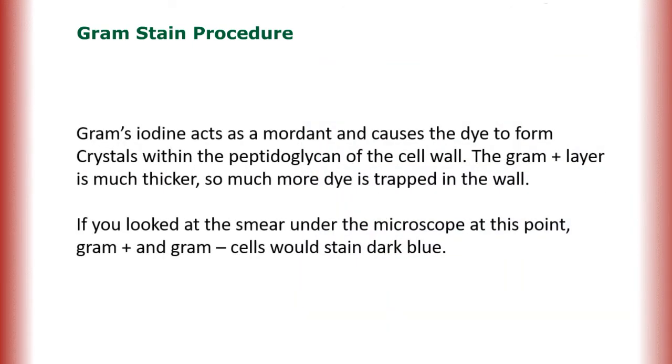Gram's iodine acts as a mordant and causes the dye to form crystals within the peptidoglycan of the cell wall. The Gram positive layer is much thicker, so much more dye is trapped in the wall. If you looked at the smear under the microscope at this point, Gram positive and Gram negative cells would stain dark blue. Let's return to the video.